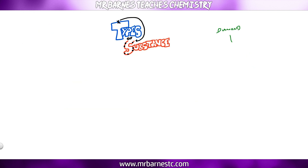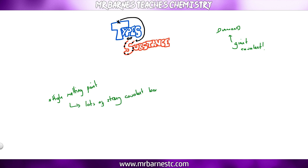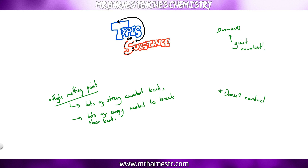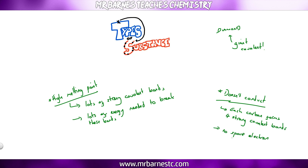Example three is diamond, which is giant covalent — you just have to remember that. The other giant covalent structures are graphite, graphene, and fullerenes or nanotubes. Giant covalent substances have a high melting point because of the many strong covalent bonds, requiring lots of energy to break. Diamond doesn't conduct because each carbon has four strong covalent bonds, leaving no spare or delocalised electrons to carry a charge. However, graphite, graphene, and nanotubes only make three covalent bonds, so they do conduct — but most giant covalent compounds do not.